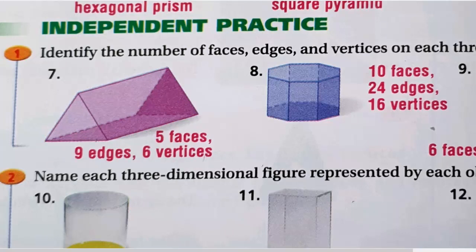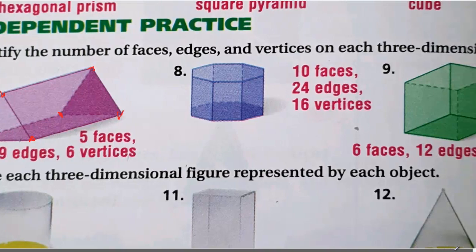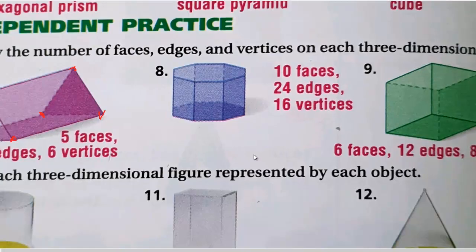How many vertices? We count one, two, three, four, five, six — six vertices. Let's go to question eight. First I want to name the shape, then count faces, edges, and vertices.